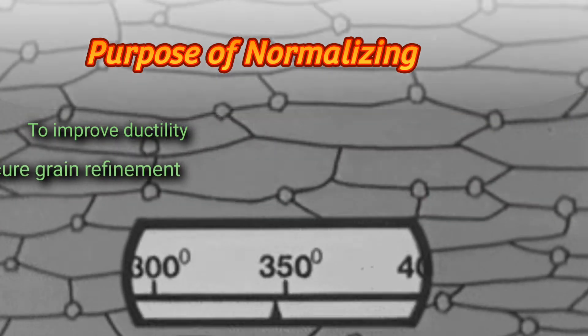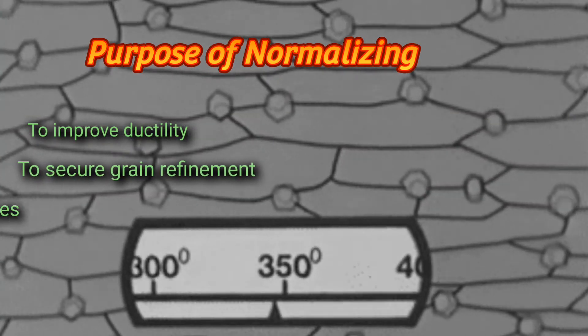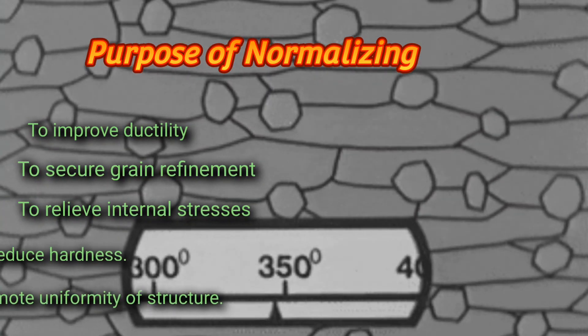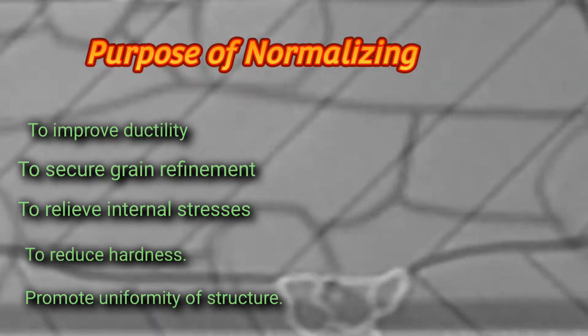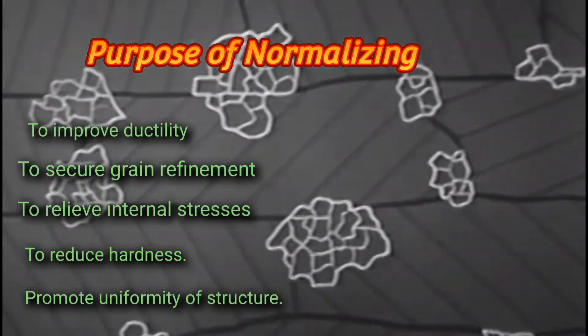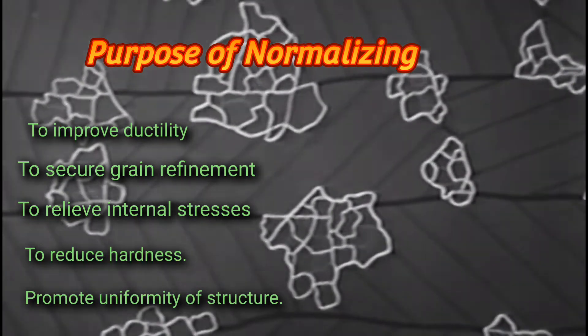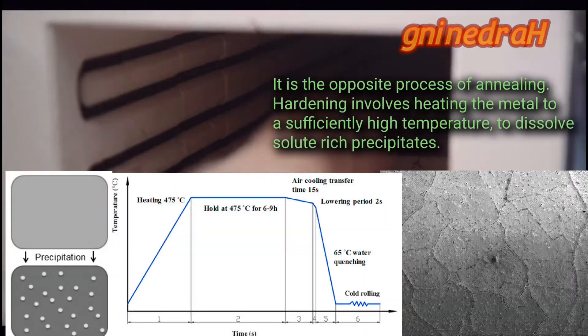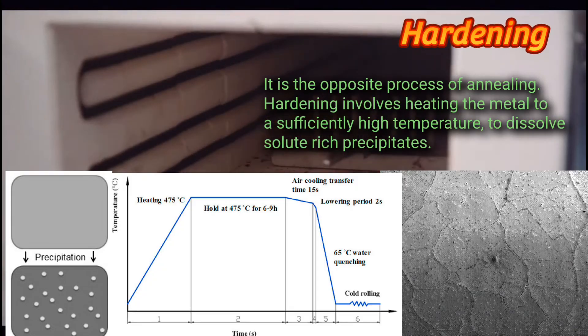Purpose of normalizing: to improve ductility, to secure grain refinement, to relieve internal stresses, to reduce hardness, and to promote uniformity of structure.